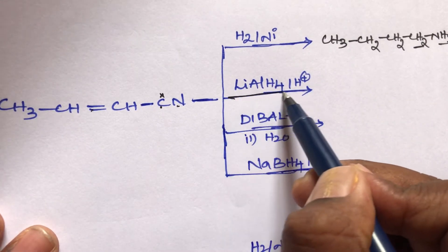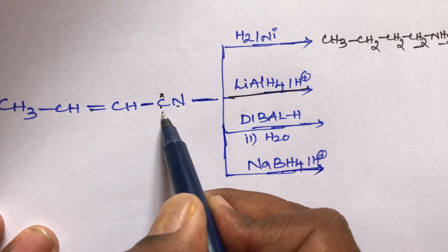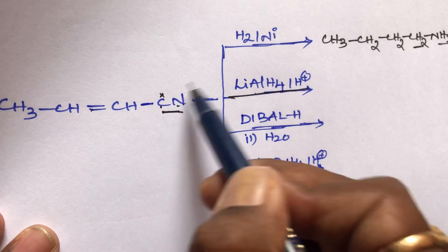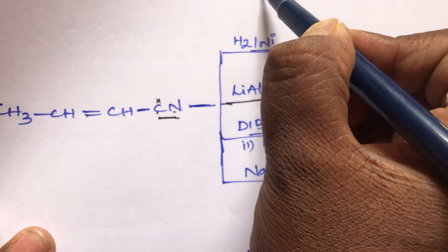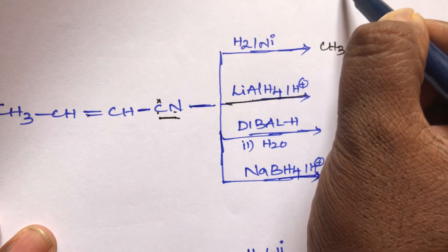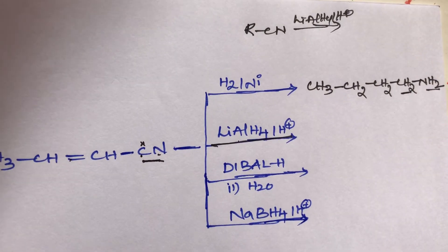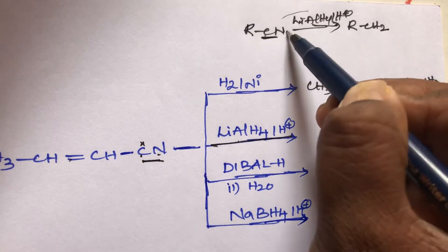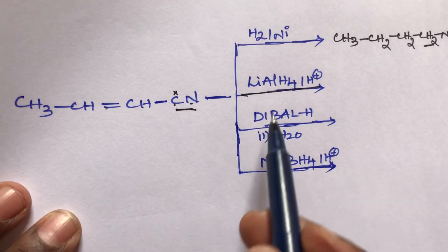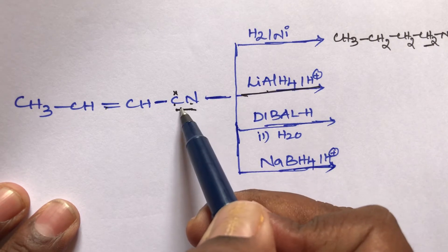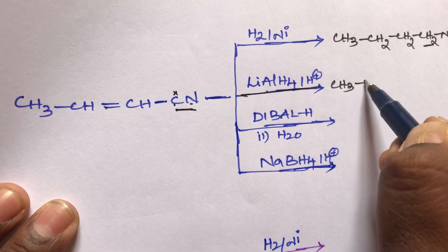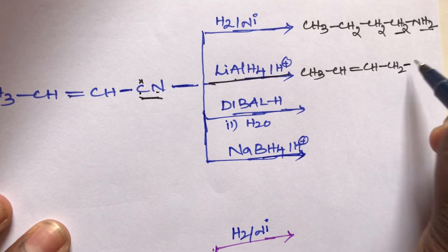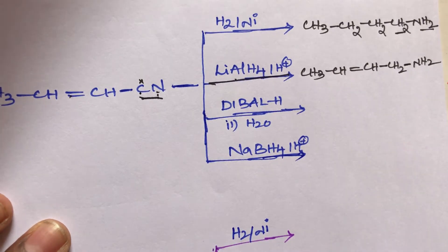Second: this compound reacts with lithium aluminum hydride (LiAlH4). LiAlH4 is a strong reducing agent but can reduce only the cyanogroup; it cannot reduce the double bond. RCN in the presence of LiAlH4 and acidic hydrogen: the cyanogroup carbon becomes CH2 and N becomes NH2. So the product retains the double bond: CH3-CH=CH-CH2-NH2.